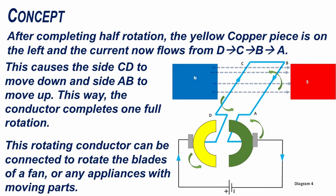After completing half rotation, the yellow copper piece is on the left and the current now flows from D to C to B to A. This causes the side CD to move down and side AB to move up. This way, the conductor completes one full rotation. This rotating conductor can be connected to rotate the blades of a fan or any appliances with moving parts.